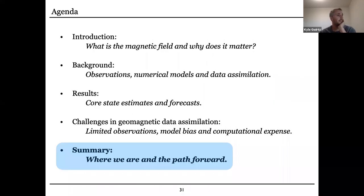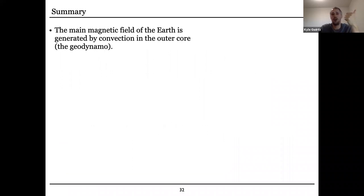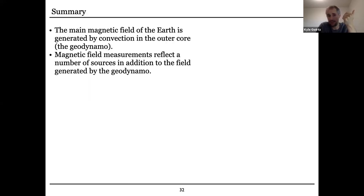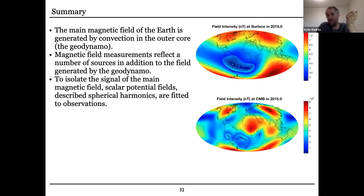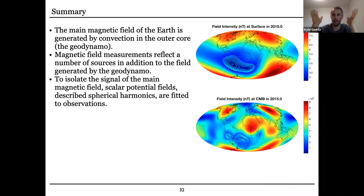To wrap up what we just talked about: we discussed the so-called main magnetic field or the core field of the planet — the field generated by convective flow in the outer core, the geodynamo. We have this issue where the magnetic field measurements reflect the influence of a lot of different sources, not just the geodynamo we're interested in, so we rely on geomagnetic field models built from the observations that describe a potential for the field in spherical harmonics, to isolate the large-scale features of the field that we believe are coming from the geodynamo.